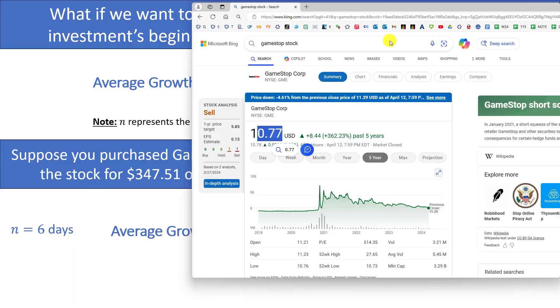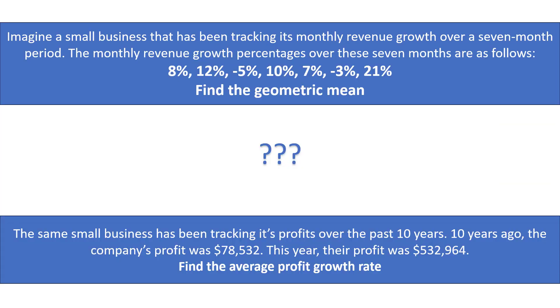All right so here we have a couple examples for you to try. We have the revenue growth over the last several years for this company, so you're asked to find the geometric mean. And then we have the same company which has the profit per year - we have the ending value and the beginning value, so in this one you're asked to find the average profit growth rate. Go ahead and give those a shot and I think that's all I have to talk about in this video, so hopefully you found it useful and I will see you in the next one.